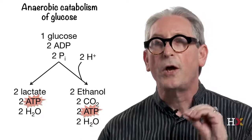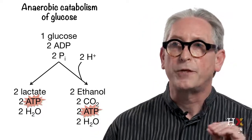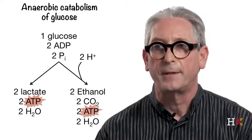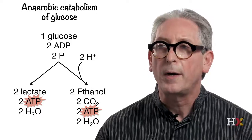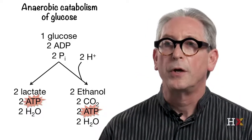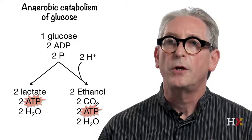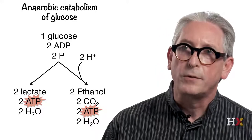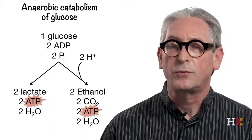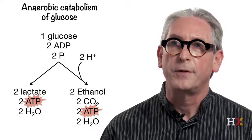In conclusion, under anaerobic conditions, fermentation regenerates NAD+. Overall, glycolysis and fermentation together consume one molecule of glucose, two molecules of ADP, and two inorganic phosphates, to produce two molecules of ATP, two molecules of water, two molecules of lactate (lactic fermentation), or two molecules of ethanol and two molecules of carbon dioxide (ethanol fermentation). In the next set of videos, we will discuss specific examples including glycolysis in red blood cells.